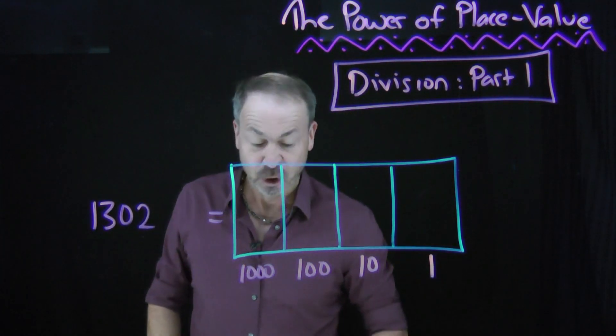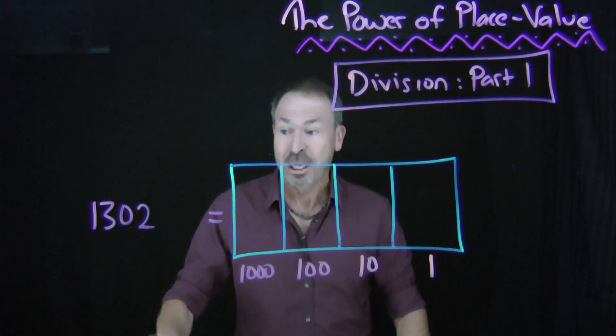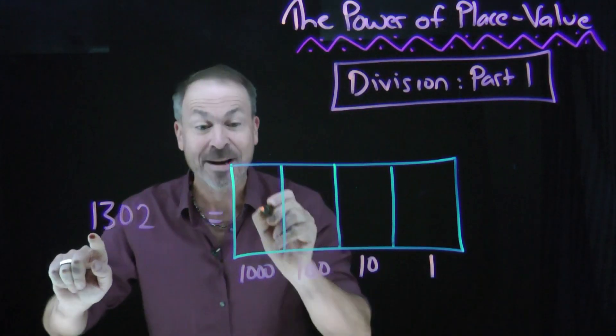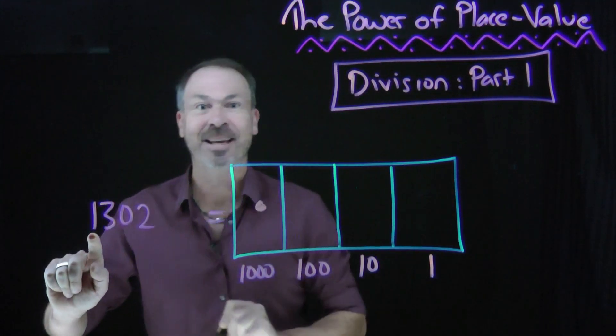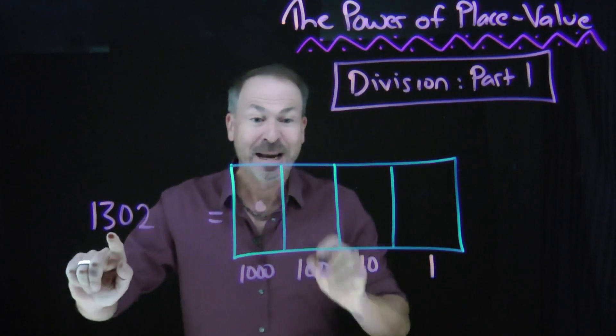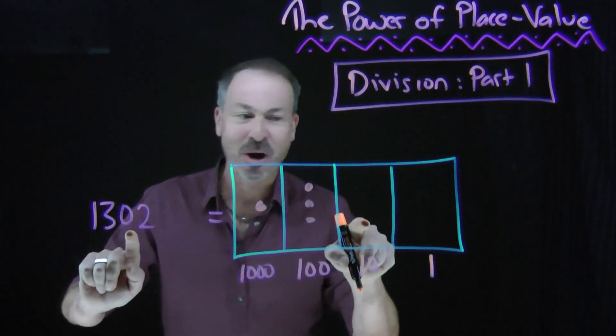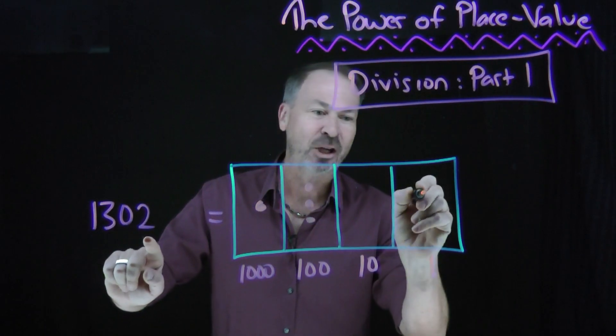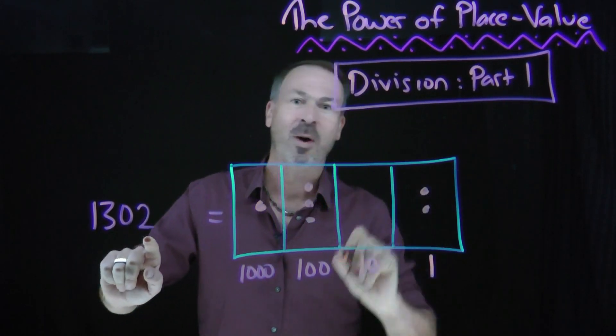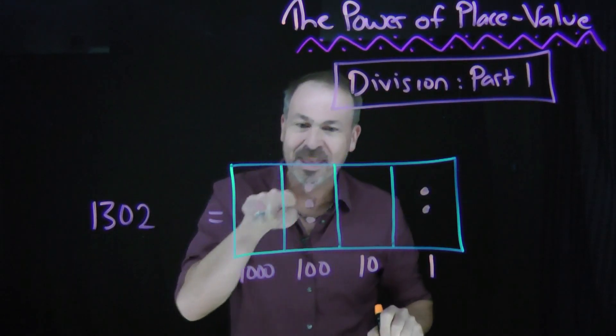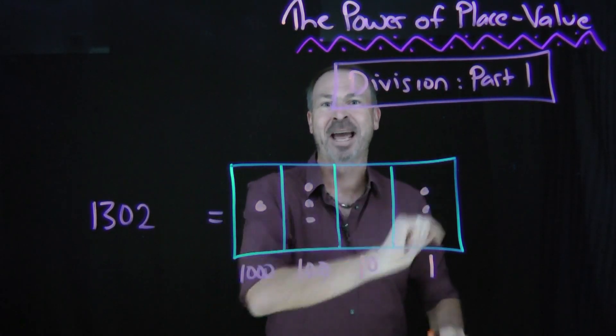In fact, the number one thousand three hundred and two, for example, is literally one thousand, three hundreds, no tens, and two ones. One thousand three hundred and two.